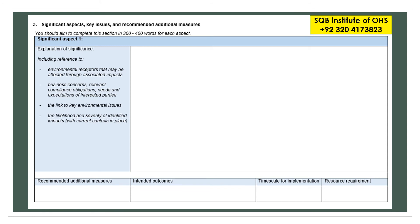Moving forward to Section 3. In this section you have to choose a single aspect and then identify its key issues and recommended additional measures. You have to write all the environmental receptors, business concerns, relevant compliance obligations, needs and expectations of interested parties linked to key environmental issues, and the likelihood and severity of your identified impacts. After that, you have to write control measures, recommend additional measures, their intended outcomes, the timescale for implementation, and what resources you will require to complete these control measures in order to reduce your impact.